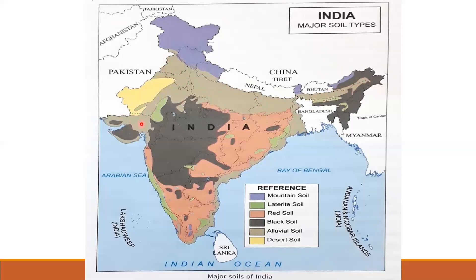Now, desert soil. Desert soil is shown in yellow color. Desert soil is found in the deserts of Rajasthan and Gujarat.